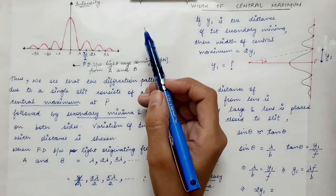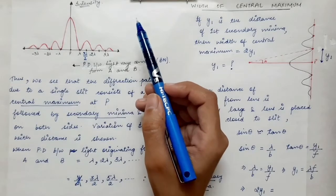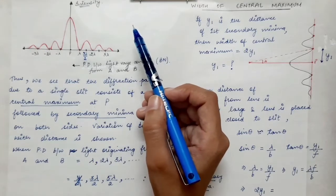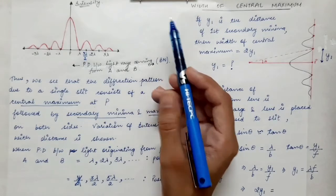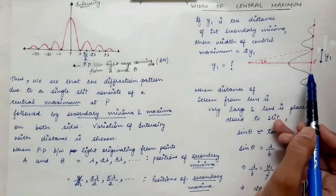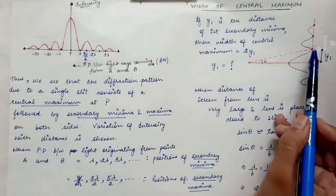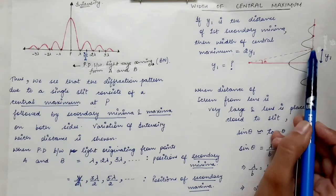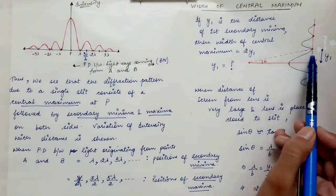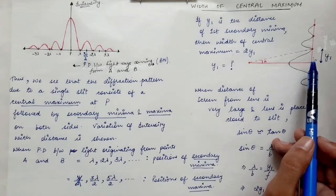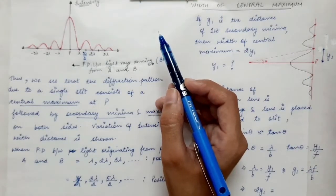In the previous lecture we obtained the conditions for the diffraction pattern — the various bright and dark bands. At the center of the screen, at point P, we obtain a central maximum. On either side of the central maximum we obtain various minima, and between the secondary minima we obtain secondary maxima.